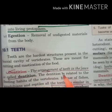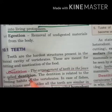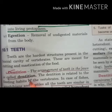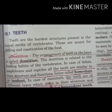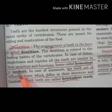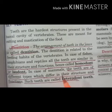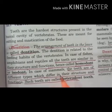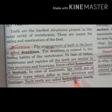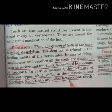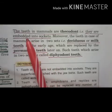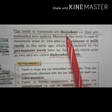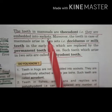Dentition is the arrangement of teeth in the jaws. In some animals the teeth are similar in structure and function — these are called homodont or isodont teeth. In the case of mammals, the teeth are of different types which differ in structure and function — such teeth are called heterodont teeth. The teeth in mammals are also thecodont, meaning they are embedded into sockets of the gums.